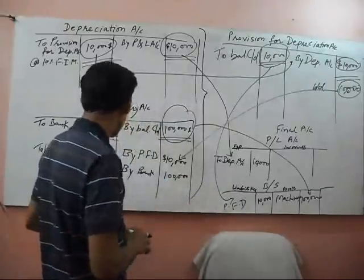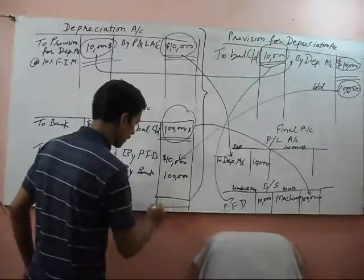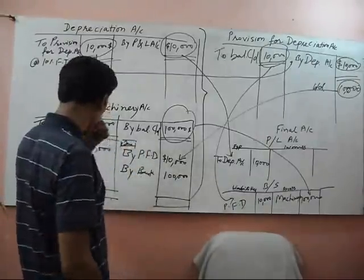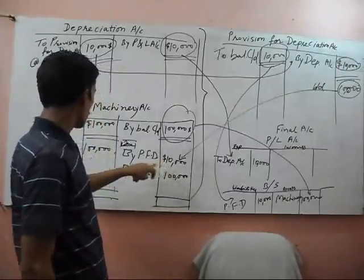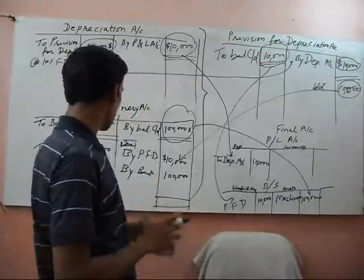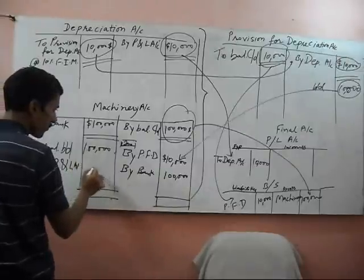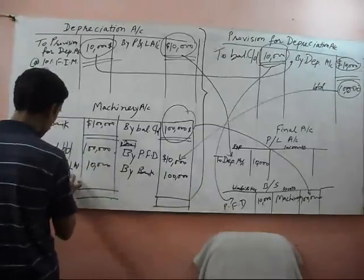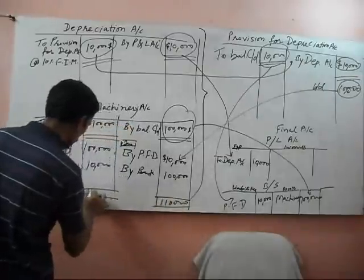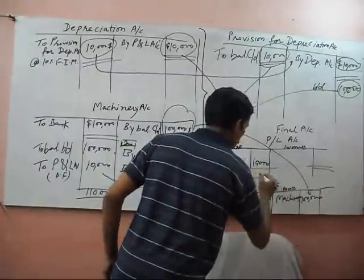then what is the profit or loss in this? We will calculate. This is the first of January of the next year. One lakh minus 10,000 equals 90,000. And the sale is of one lakh. It means we have a profit from the sale of machinery of ten thousand. This is the balancing figure — one lakh ten thousand on both sides. And this amount of ten thousand will go to the next year's profit and loss account credit side.